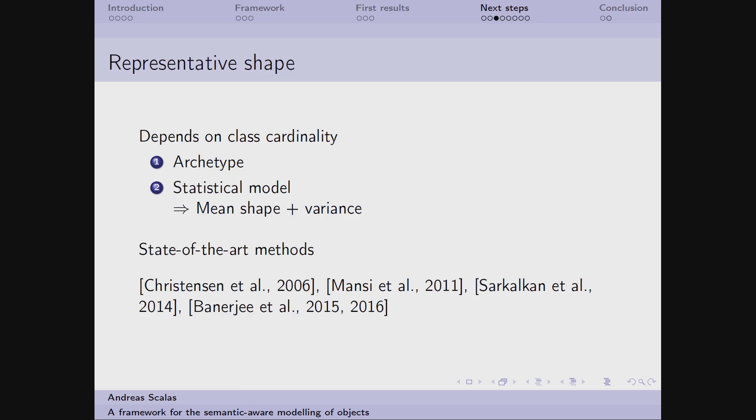Now talking about the extraction of the representative shape, it should be simple to build. We can think of electing the shape of one object in the class as archetype, but since the shape of the objects in the class can vary considerably, this approach can introduce an excessive error.